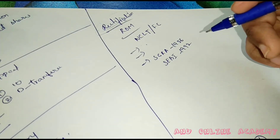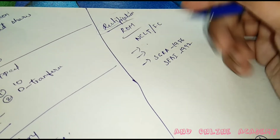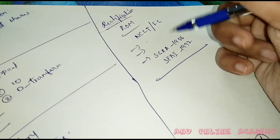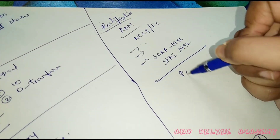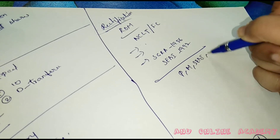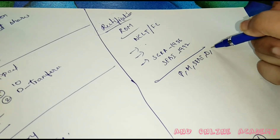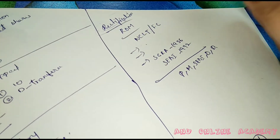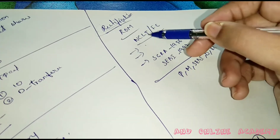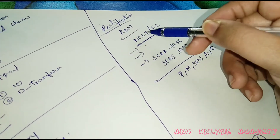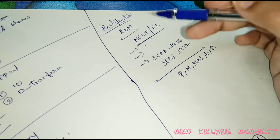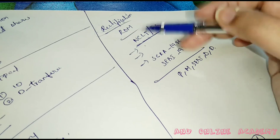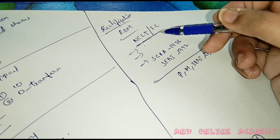The Securities Contracts (Regulation) Act 1956 deals with stock exchanges. Who can apply for rectification: any person, member, SEBI, depository, or depository participant. There is no time limit for application for rectification. The order of NCLT may either dismiss the application or direct the company to rectify the register of members and pay damages to the aggrieved party.